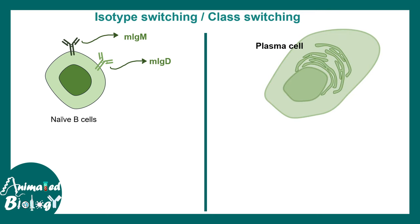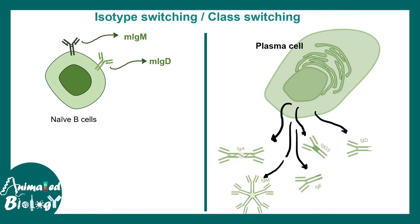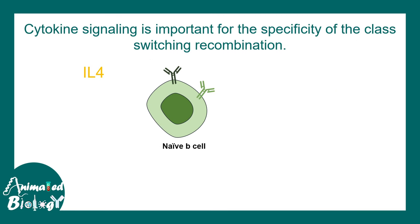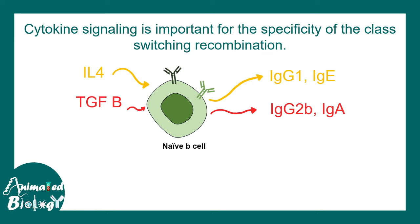A naive B cell typically has membrane-bound IgM or IgD. Interleukins dictate which antibody class a plasma cell will produce. If stimulated by IL4, it produces IgE and IgG1. TGF-beta leads to IgG2b and IgA production. IL5 leads to IgA production. These polarizing interleukins determine the type of plasma cell produced and the resulting antibody class.